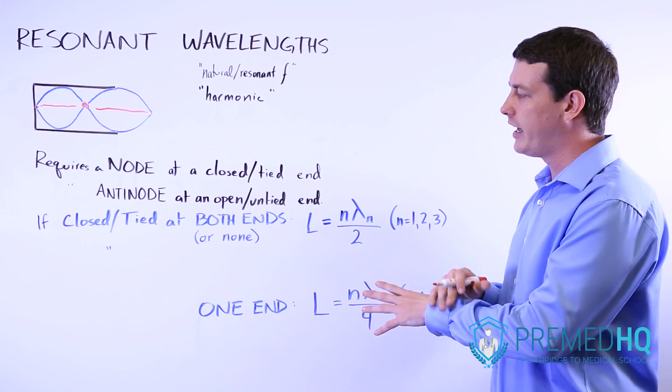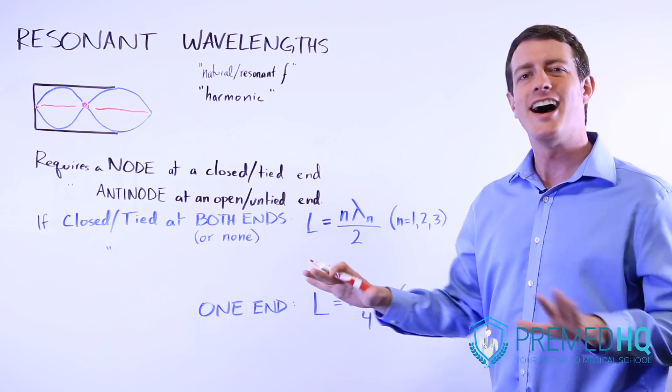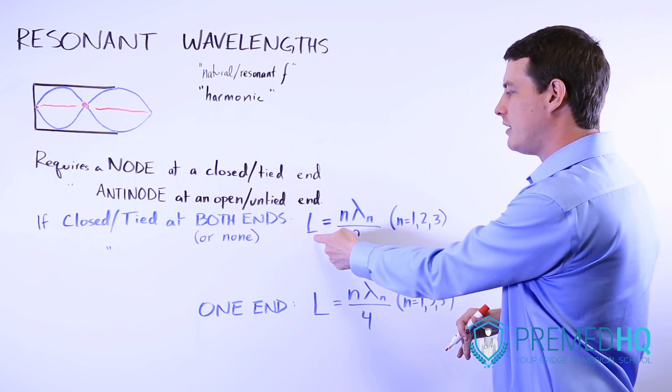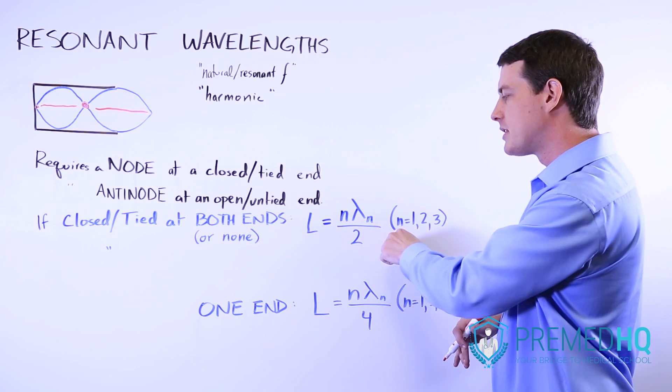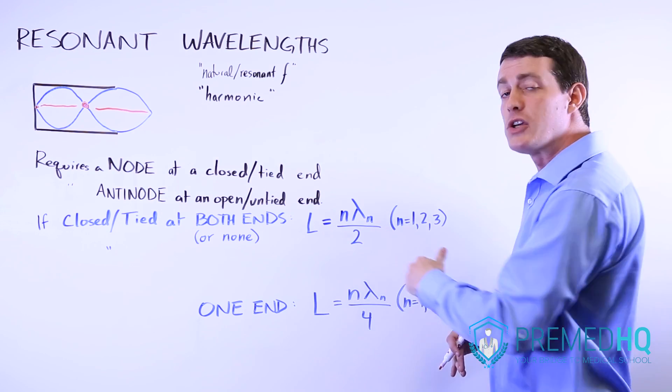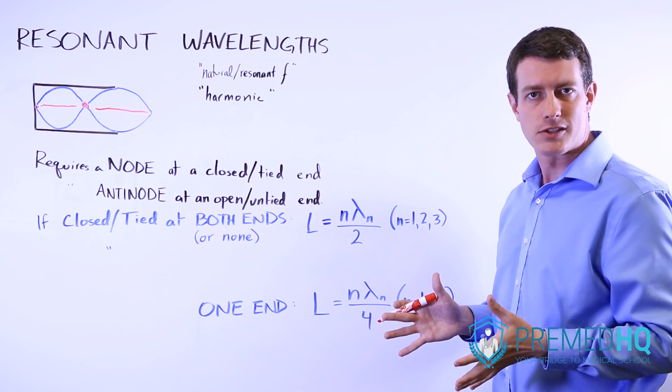So if it's closed and tied at both ends or at neither end, then you use this formula: L equals n times lambda sub n divided by 2. And the lambda here represents the wavelength.